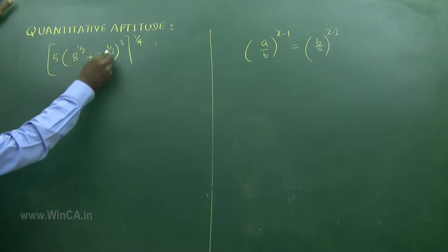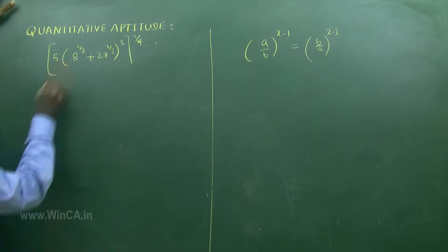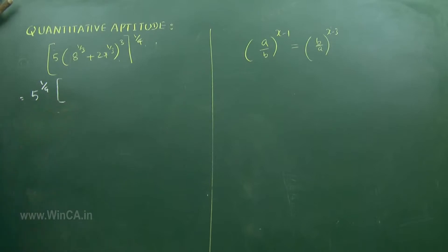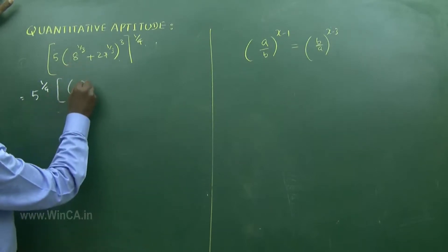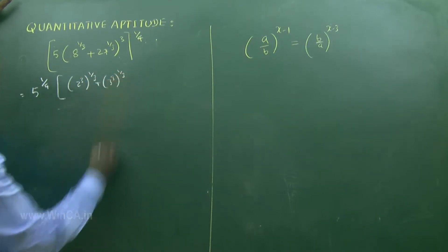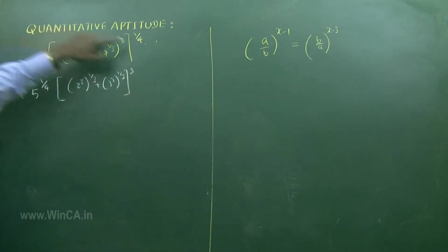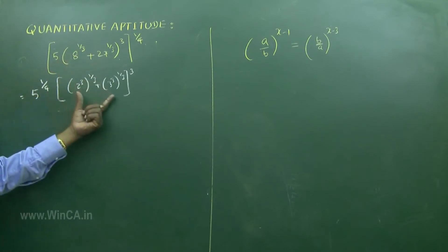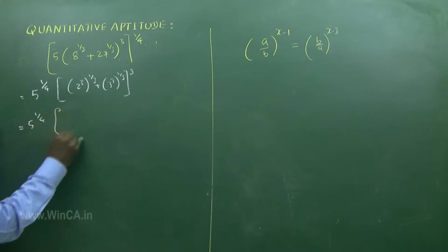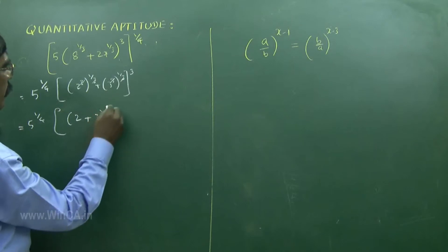Simplify: 5 into (8 to the power of 1 by 3 plus 27 to the power of 1 by 3) whole cubed, whole to the power of 1 by 4. Take 5 to the power of 1 by 4 out. Write 8 as 2 cube whole to the power of 1 by 3 — that gives 2. Write 27 as 3 cube whole to the power of 1 by 3 — that gives 3.